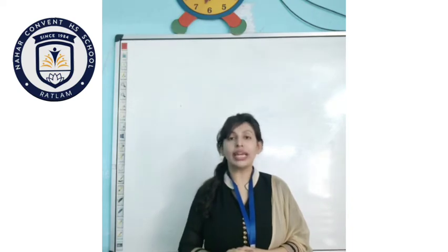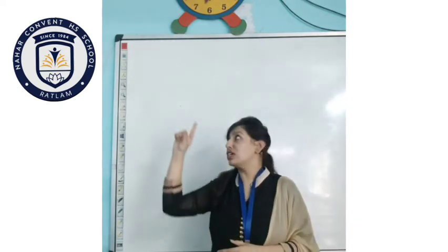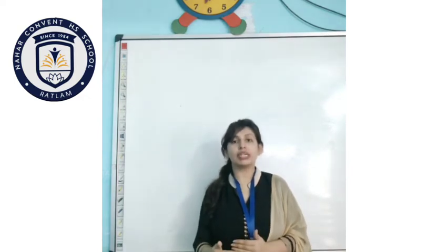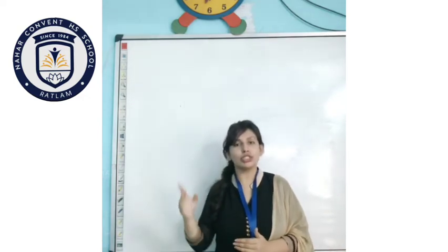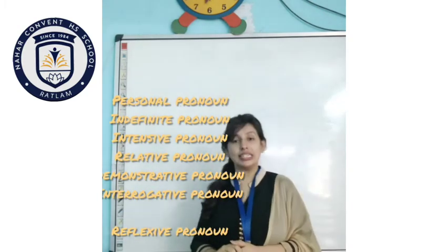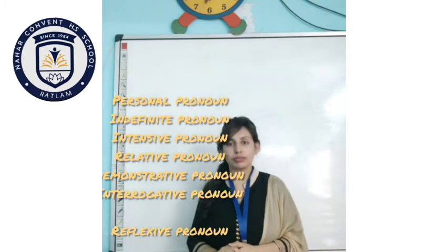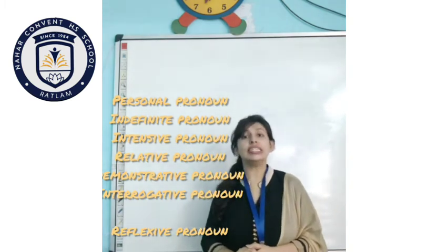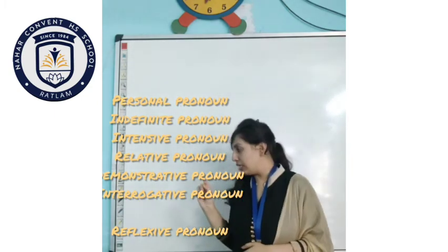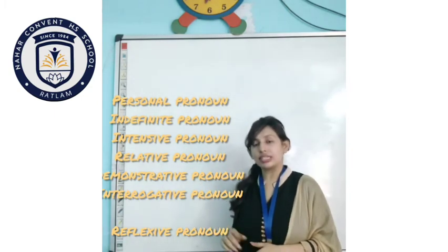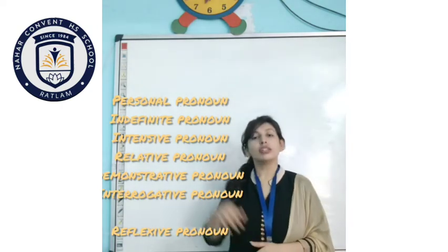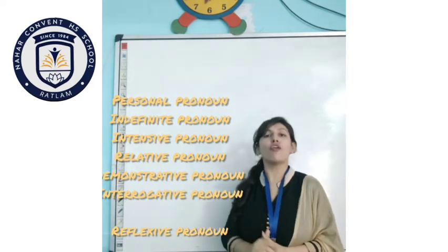So the first one is personal pronoun. Let's see all the types by their short names. The first one is personal pronoun, the second one is indefinite pronoun, the third one is intensive pronoun, the fourth one is relative pronoun, the fifth one is demonstrative pronoun, the sixth one is interrogative pronoun, and the last one is reflexive pronoun. So these are all the types of pronouns.